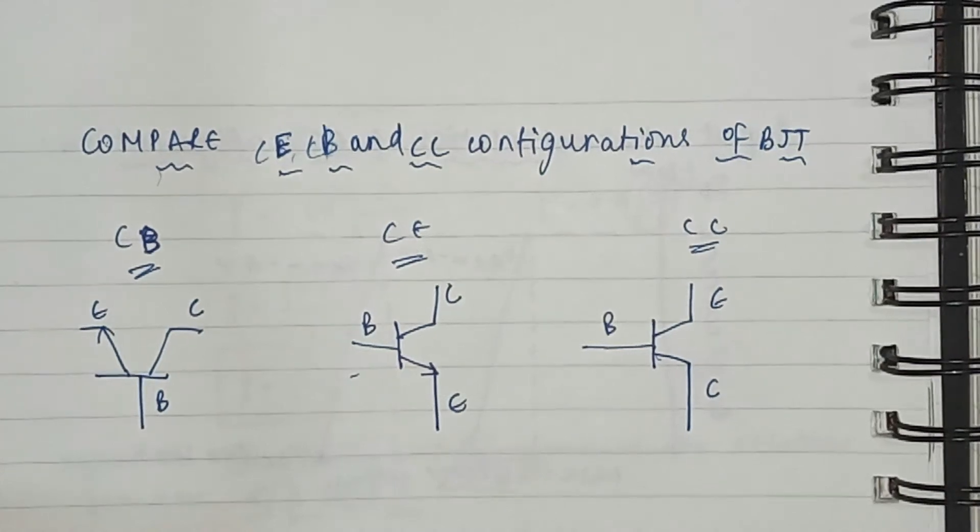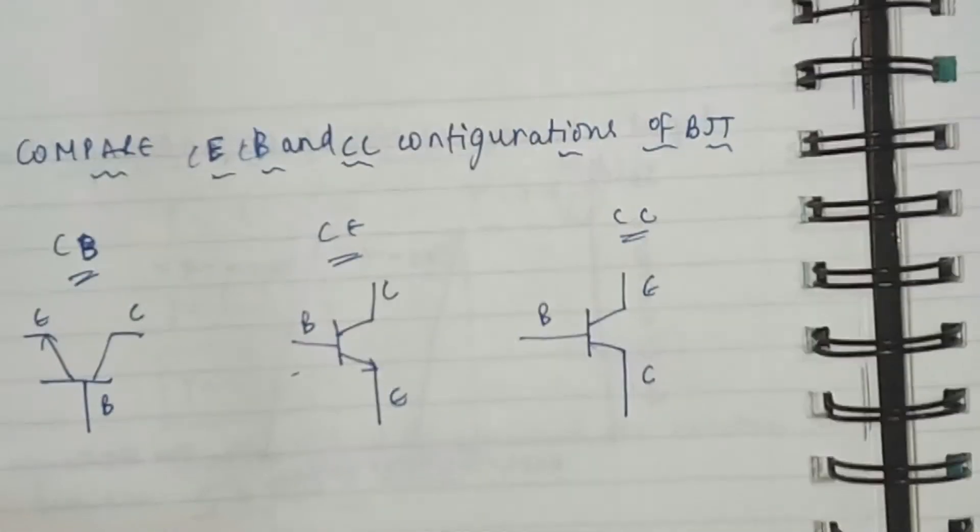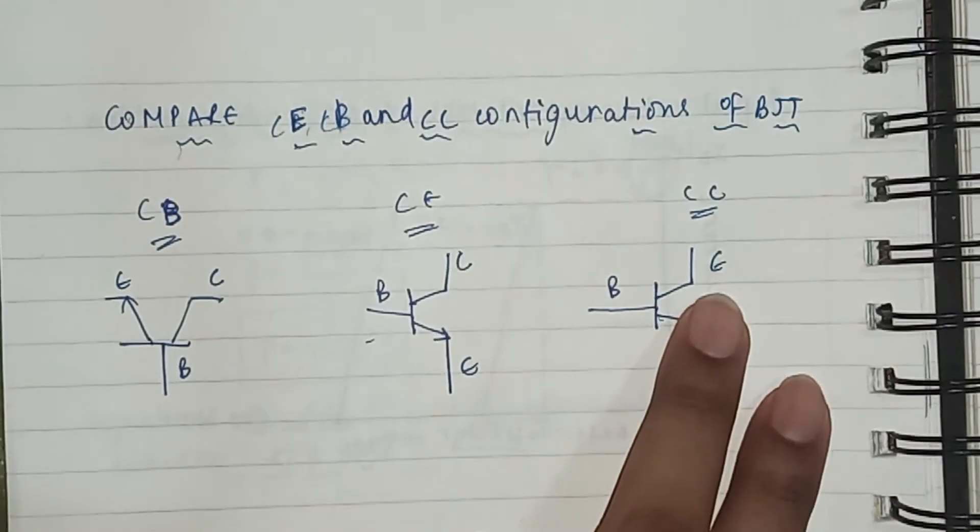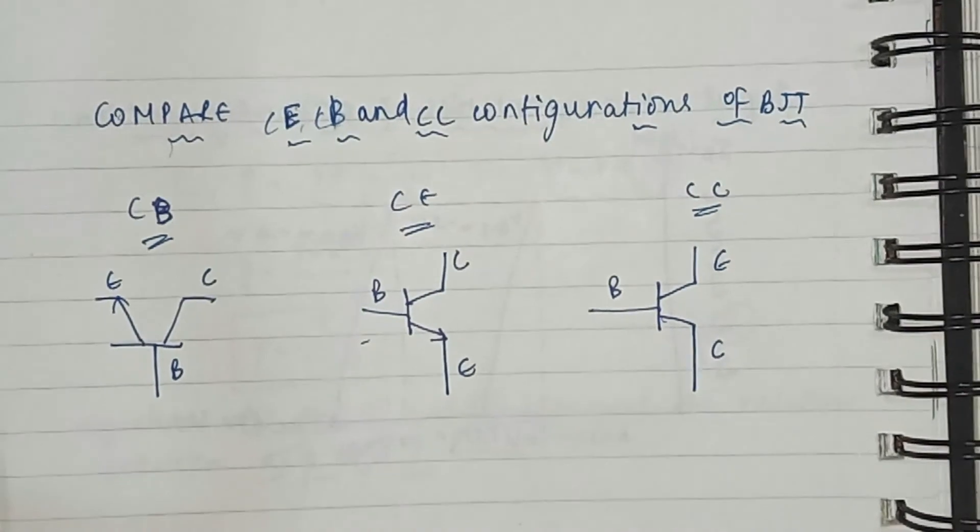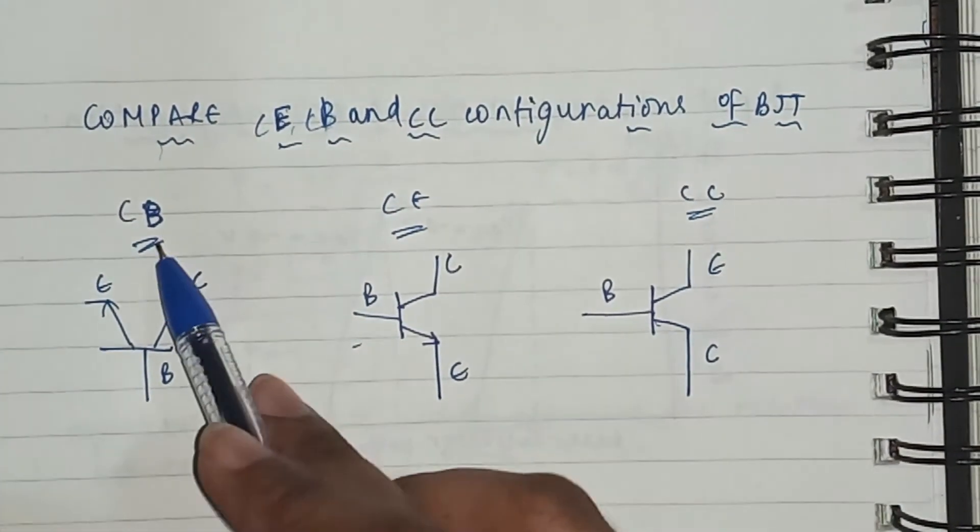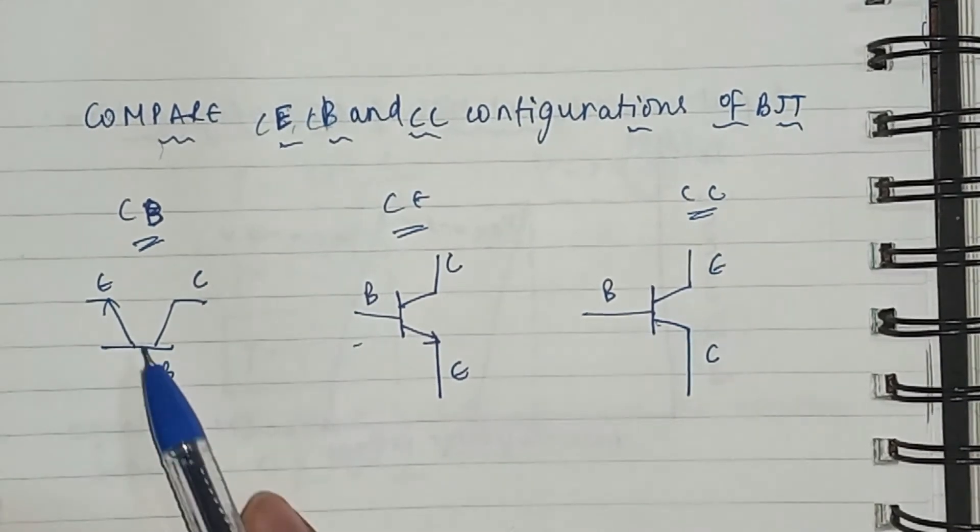Firstly, when we are talking about the comparison of these three, the CB, CE, and the CC configurations, we have to discuss about the circuit arrangements first. So in CB configuration we have the common base. The base is common here in between both emitter and collector.